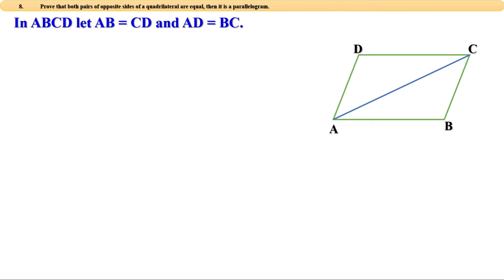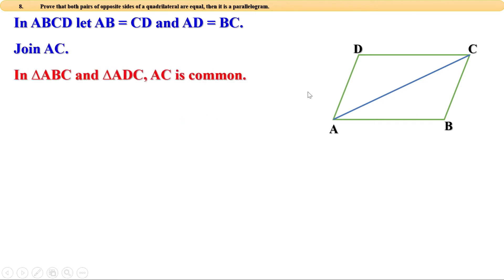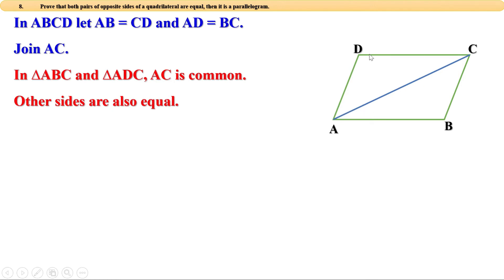AC is common to both triangles. Given that AB equals CD and AD equals BC, the three sides of triangle ABC are equal to the three sides of triangle ADC. Therefore, the triangles are congruent.